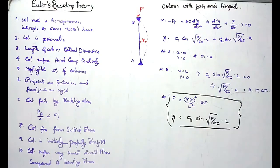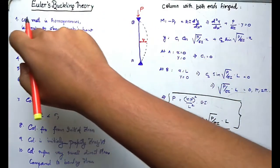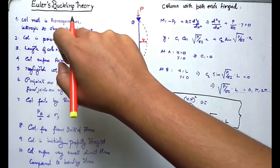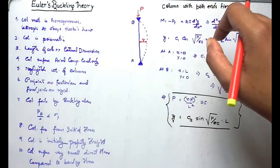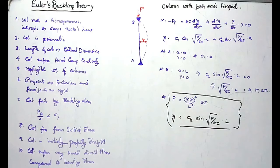I will first validate the theory by reviewing the assumptions. The first assumption is that the material should be homogeneous, isotropic, and it should obey Hooke's law. That means the material is equally distributed in all directions and its properties are the same throughout.